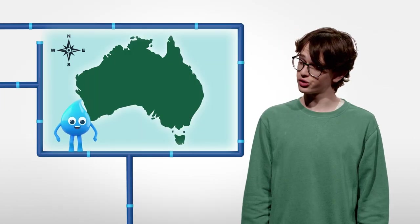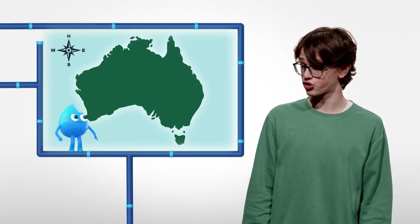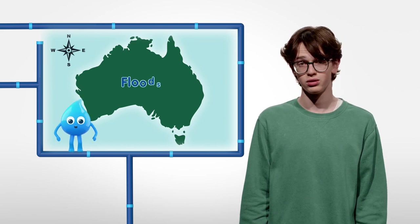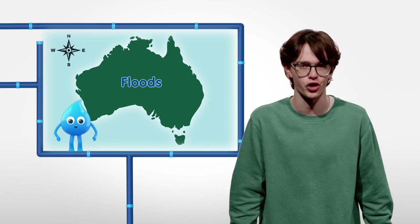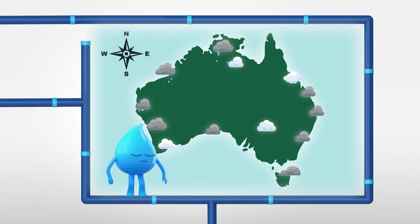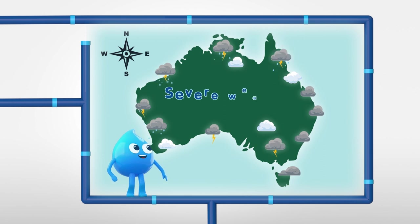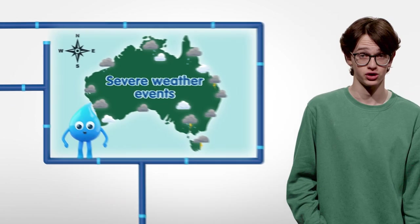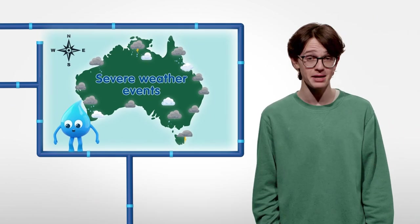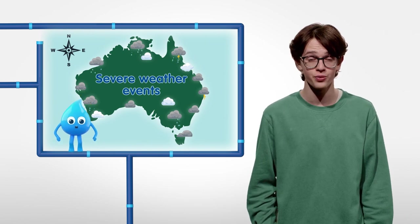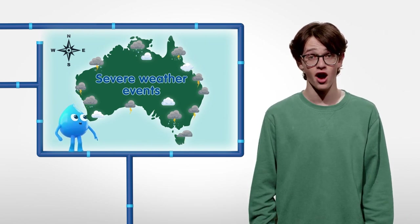So can we look at what extreme weather events are? Too much rain has got to cause flooding, right? Although floods are a natural part of the water cycle, when they're severe they can be dangerous, affecting people, animals, their homes and environment.